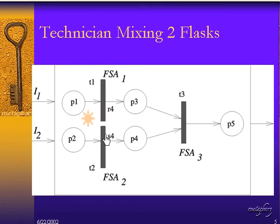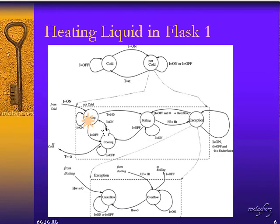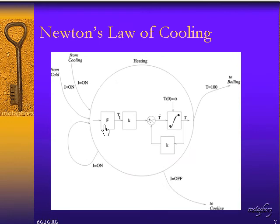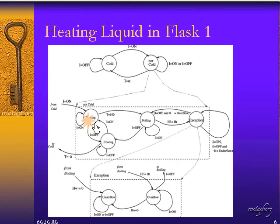To summarize, we have a multi-model with a top layer of a Petri net, a second layer which is itself a hierarchy of three levels — all finite state machines — and then a last layer underneath a couple of states, notably heating and cooling.